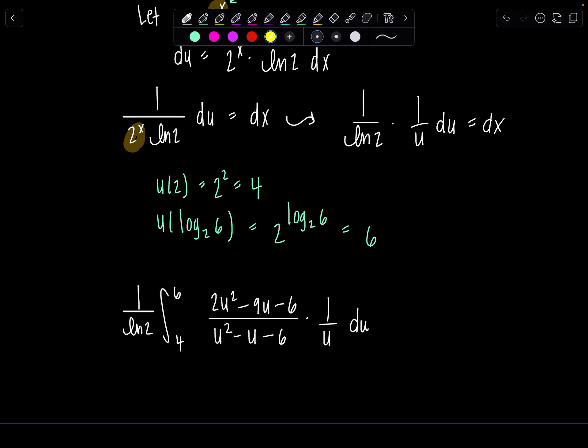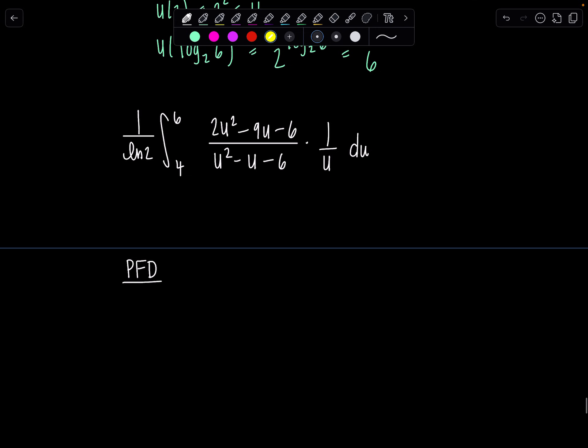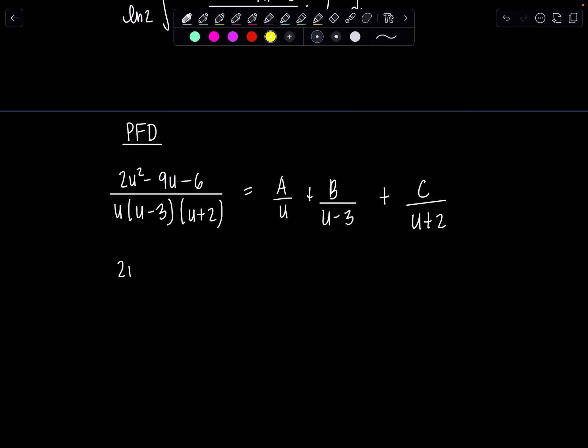Now the denominator factors, but the numerator does not. So yep, you betcha, it's time for partial fractions. So we have 2u^2 - 9u - 6 over u(u - 3)(u + 2). Thankfully they're all linear, nothing's repeated. So this won't be too bad. We have a/u + b/(u - 3) + c/(u + 2). Multiply through by the LCD and then we'll have 2u^2 - 9u - 6 = a(u - 3)(u + 2) + b·u(u + 2) + c·u(u - 3).